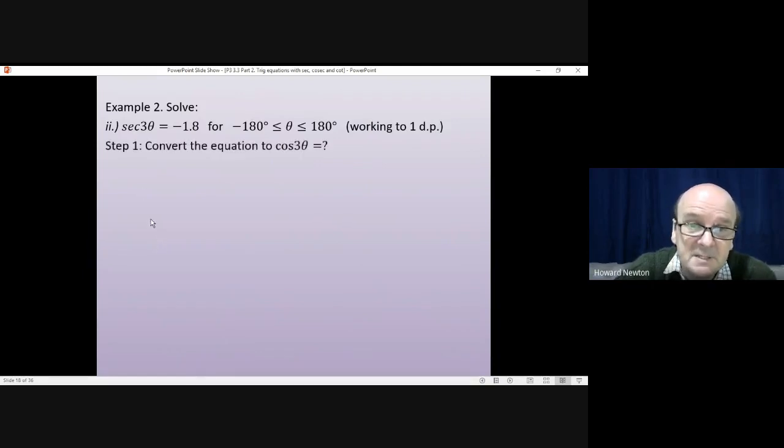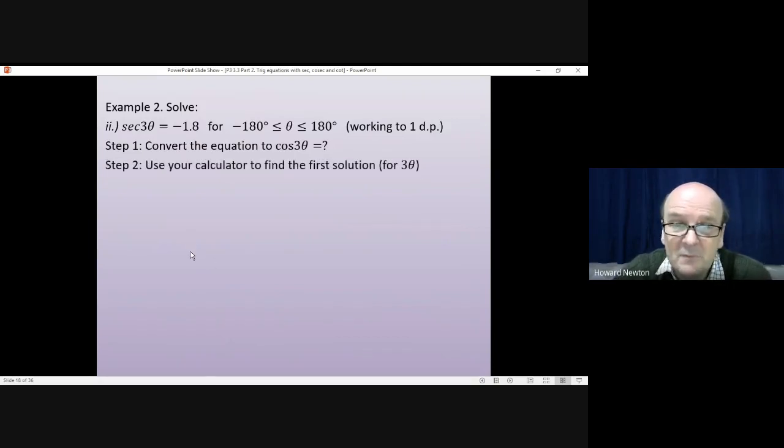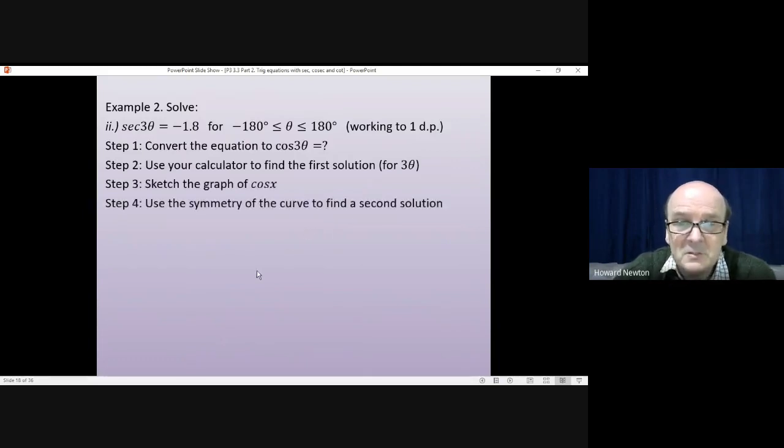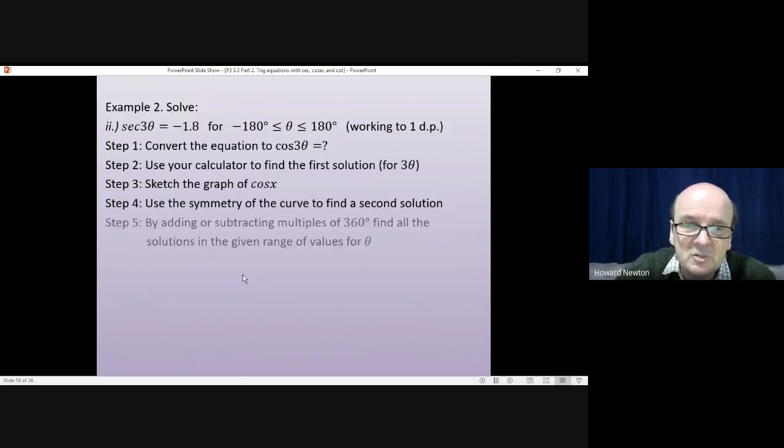What that means is the first step is to convert the equation to cosine 3θ equals something. Now, cosine is 1 divided by sec. So if I do 1 divided by sec to get cosine, I'm also going to have to do 1 divided by minus 1.8 to get the other side of this equation. From then on, it's the same as before. Use your calculator to find the first solution. Sketch the graph of cosine this time. Use the symmetry of the curve to find the second solution. Add or subtract multiples of 360 to find all the other solutions in the given range. Okay. You have a go at doing this first. Pause the video. And come back to me when you're ready.